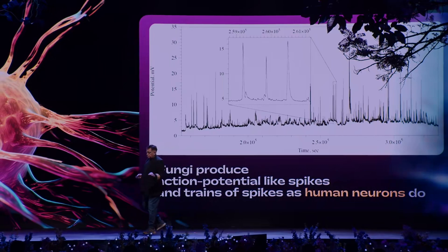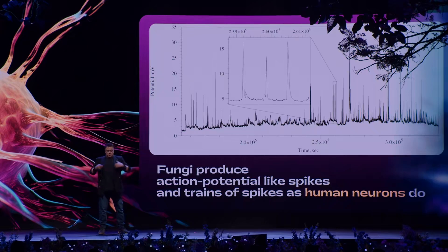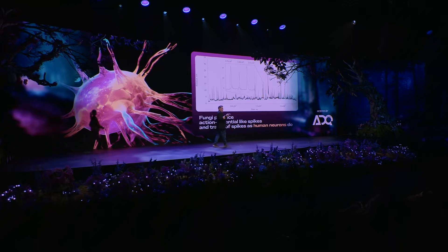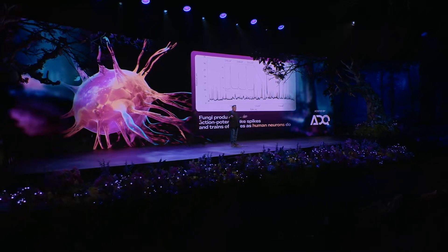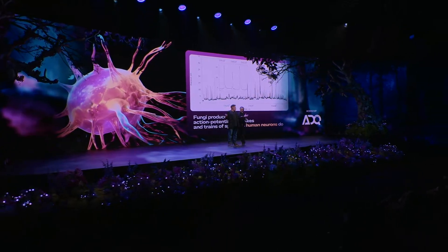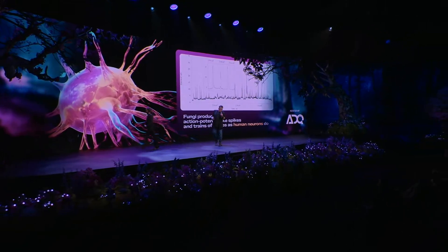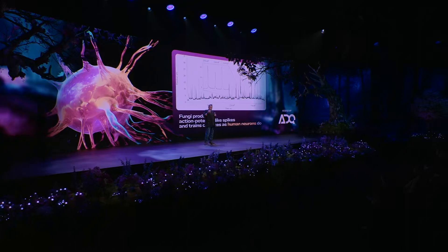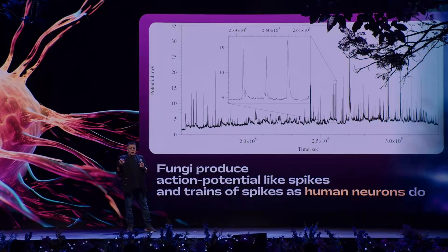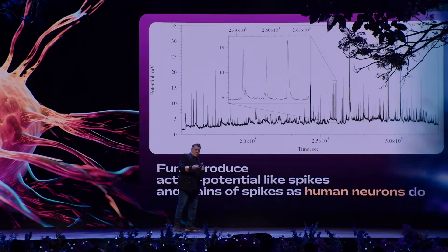In our brain, neurons spike fast because we must act fast and we live a very short life — extremely short life. Fungi, in theory, are immortal. They can live for millions of years. And therefore they shouldn't think fast. They can think very slowly. And therefore their action potential spikes are not 75 milliseconds, but 20 minutes.